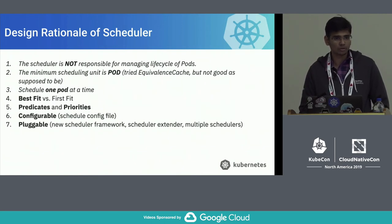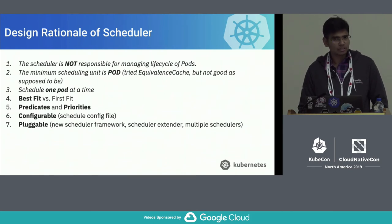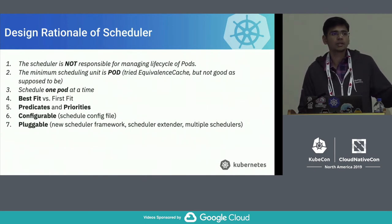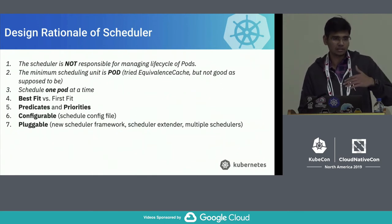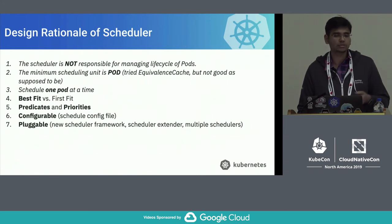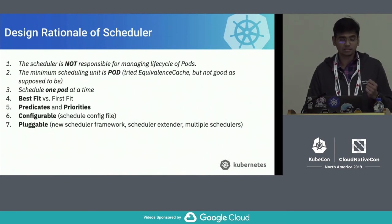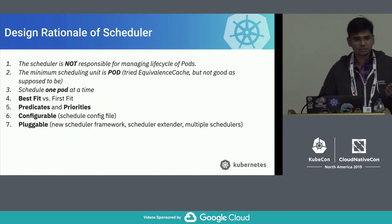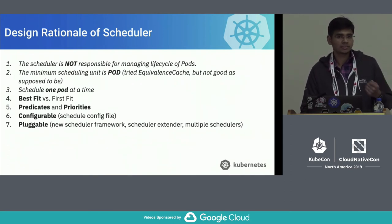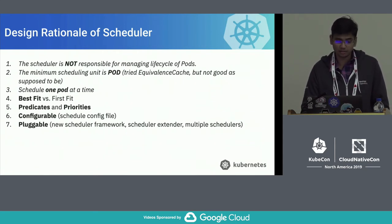The second important design choice is that the minimum scheduling unit is always a pod — not a group of pods, a job, or any other entity. We schedule one pod at a time. We also make it best-effort when choosing a node: rather than greedily exiting after finding the first fit in the predicate stage, we go through prioritization of filtered nodes to find the best fit. We also wanted to make it configurable, so cluster admins can pick and choose predicates and priorities.